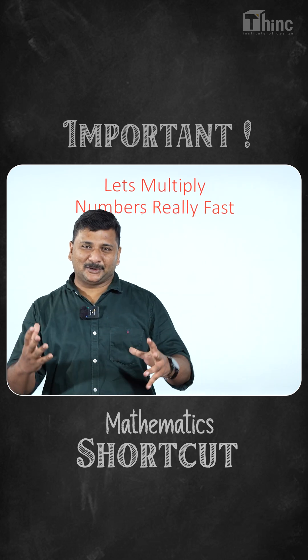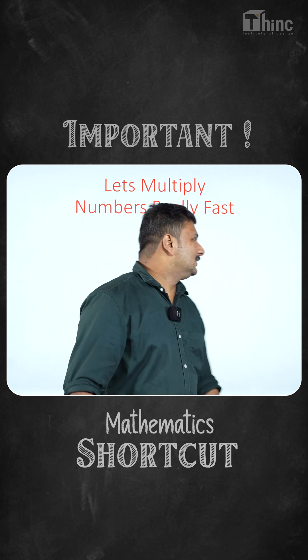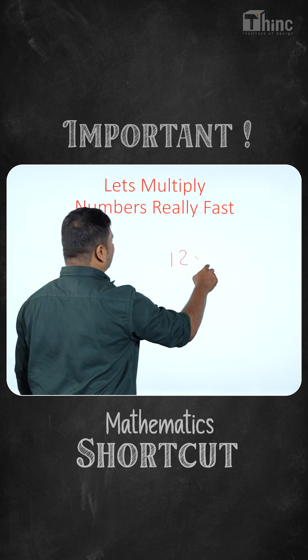Okay, let me just give you a shortcut on multiplying numbers really fast. So let's say we have to do 12 x 13.